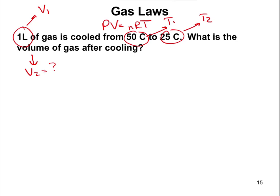Going back to PV equals nRT — what's the relationship between volume and temperature? They're on opposite sides of the equation, which means they're directly proportional. Since temperature goes down, volume should go down too. When quantities are directly proportional, we write V1 over T1 equals V2 over T2.